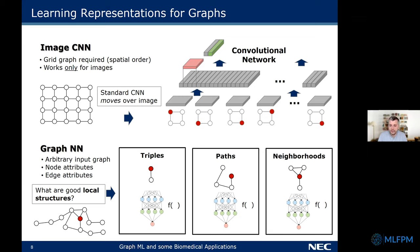Looking at the literature, you can see three different types of local structure being used: triples; paths or random walks extracted from the graph; and k-hop neighborhoods of nodes, where we aggregate information from a node's neighborhood to recompute or update its vector representation.